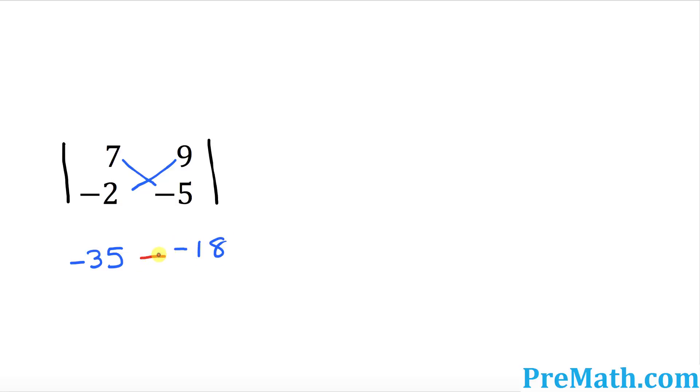Now you can see we have two negative signs next to each other. Negative and negative would become positive. So we got negative 35 plus 18.